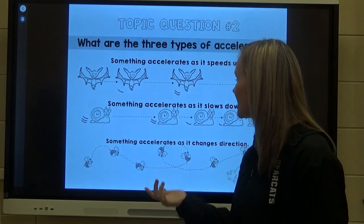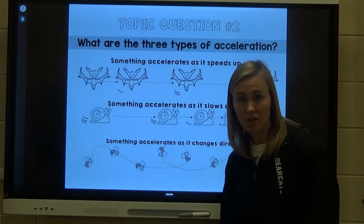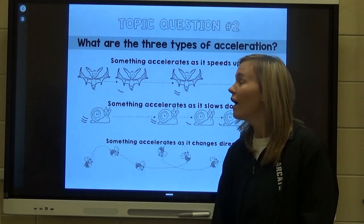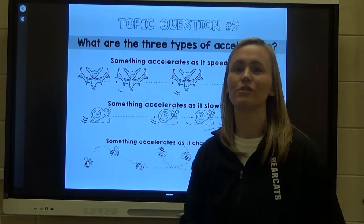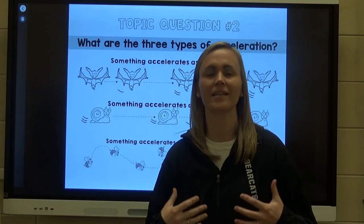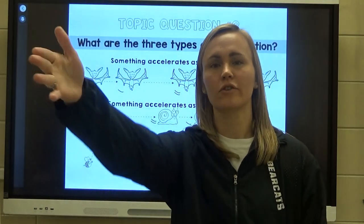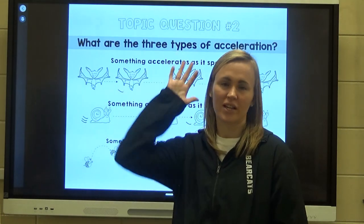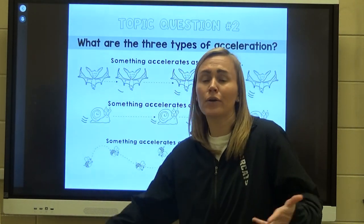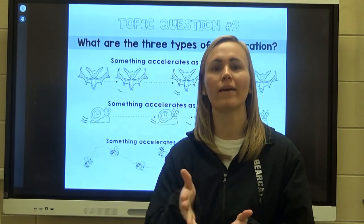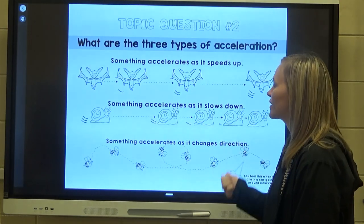There are three ways that something can accelerate. First, it can speed up. Here we have a bat that's just chilling, and then over time the bat begins to speed up — we call that accelerating. If you're sitting at a red light and the light turns green, your parents push the gas — we say they accelerate. You're going faster, increasing your speed.